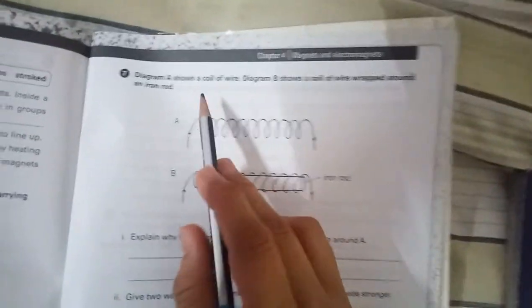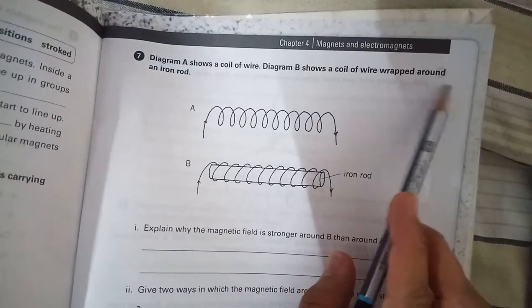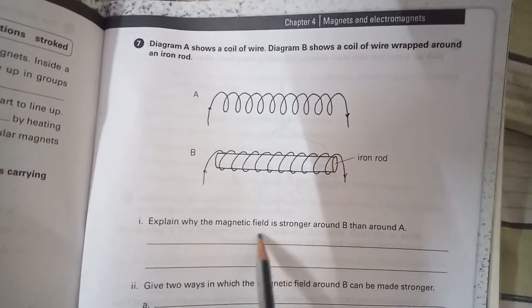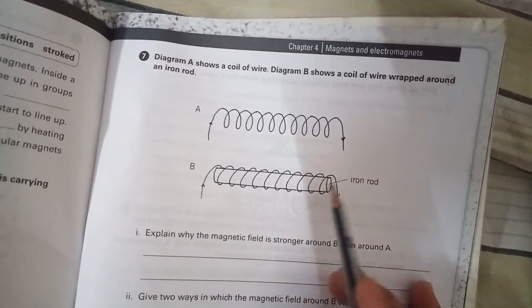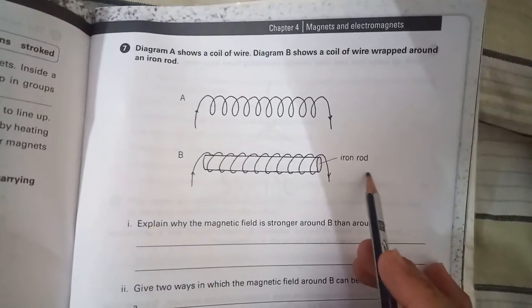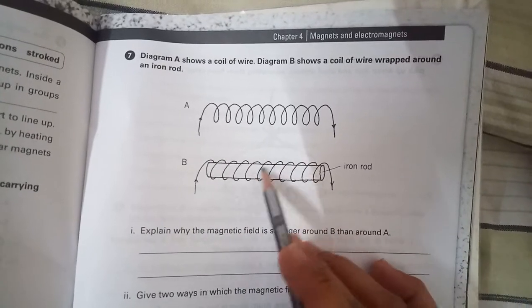Here the diagram is shown of a coil wire. Diagram B shows the coil of wire wrapped around an iron rod. Clear. Explain why the magnetic field is stronger around B than A. Why B strong than A?